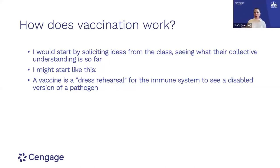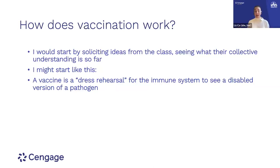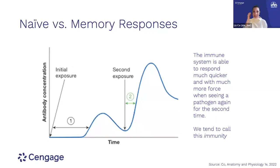I'll say: what do you guys know about vaccination? What do you know about a response to the vaccination? And I'll hear things, and I'll reflect back: what I'm hearing is that a vaccine is kind of like a dress rehearsal for the immune system — the immune system gets to see a disabled version of the pathogen, and that helps it understand and fight better next time. That's absolutely right. Then I'd go into the difference between a naive and a memory response, because students had already given me that theoretically in the classroom discussion.